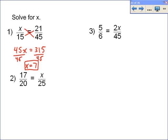Okay, we look at number 2. Again, we do our cross product. 17 times 25 is equal to 425. And then 20 times x is equal to 20x.